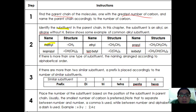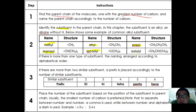Common alkyl substituents include: –CH3 is methyl, –CH2CH3 is ethyl, –CH2CH2CH3 is propyl, –CH(CH3)2 is isopropyl, –C(CH3)3 is tert-butyl, and –CH2CH(CH3)2 is isobutyl. If there are more than one type of substituent, they are arranged in alphabetical order.